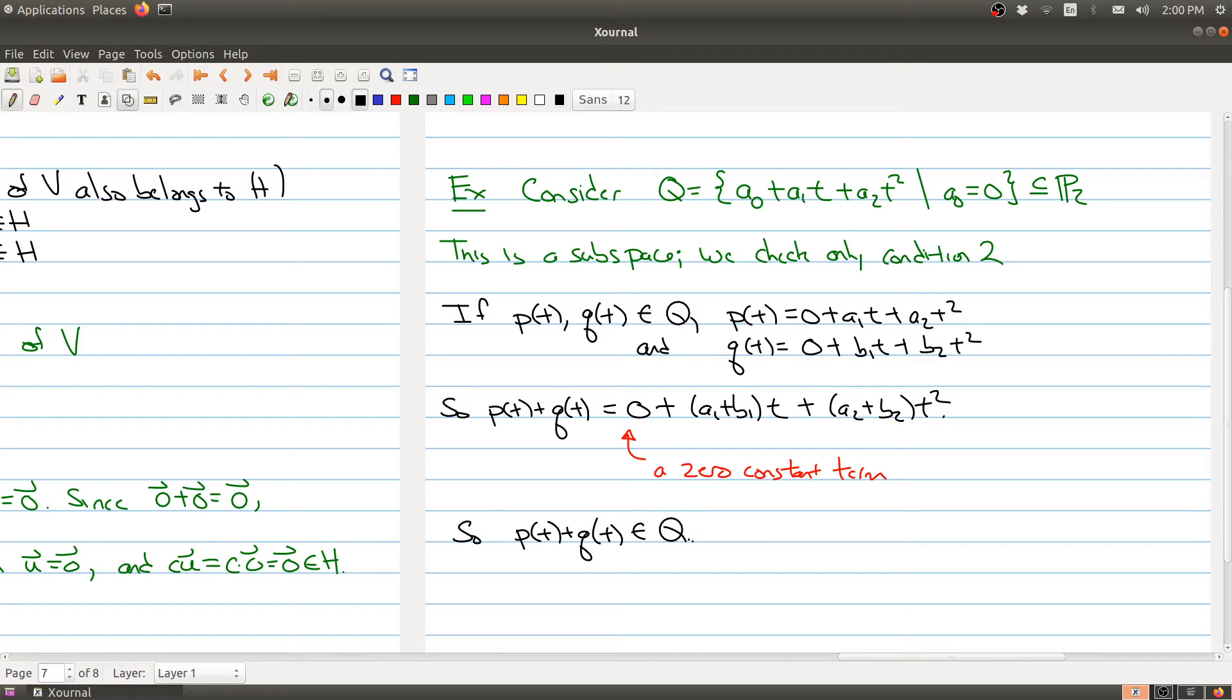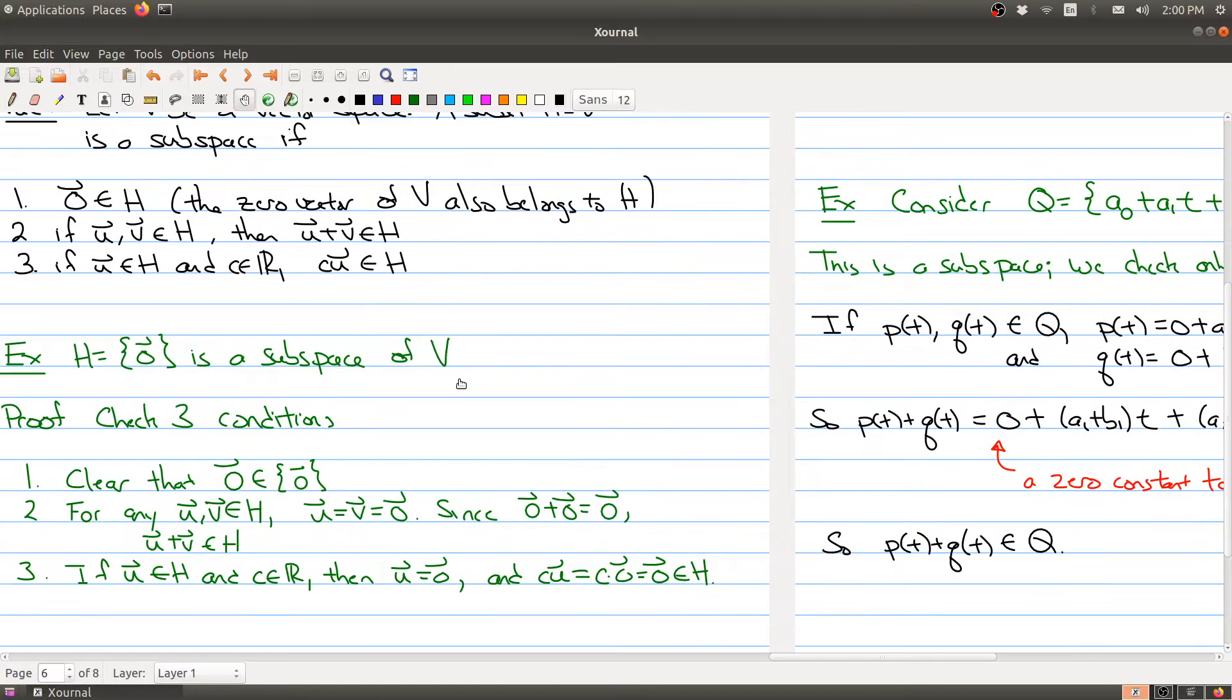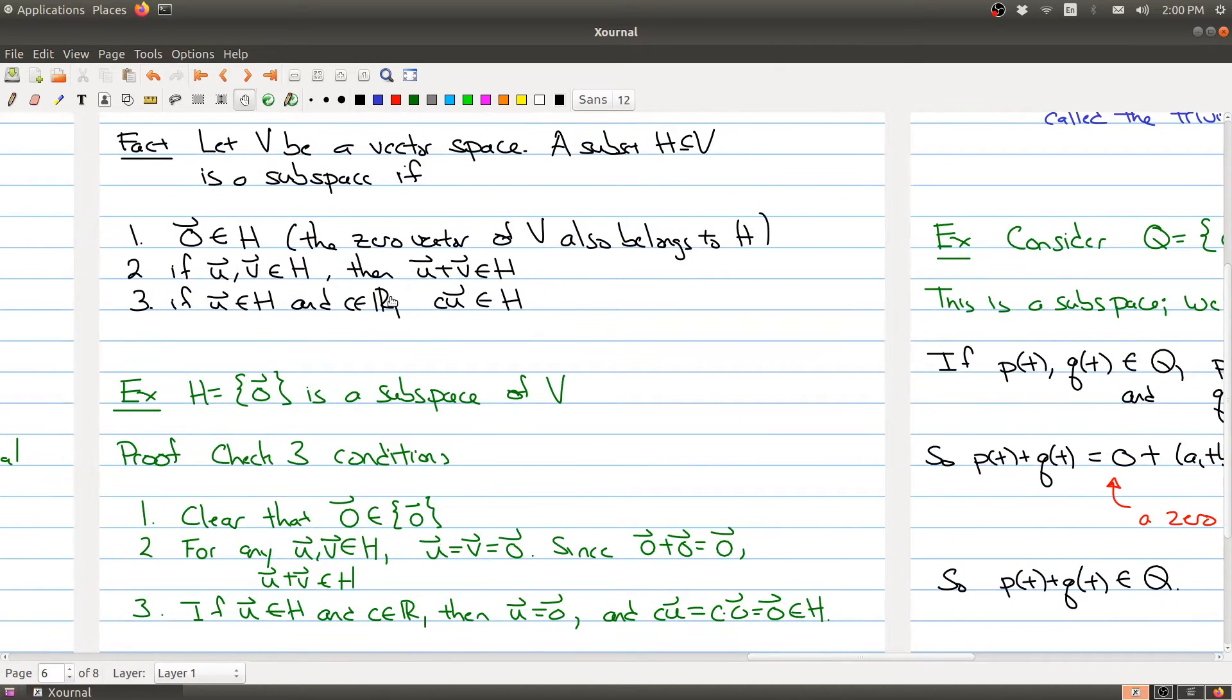And because Q contains all the polynomials with zero constant term, we have that Pt plus Qt also belongs to Q. So the claim is that this is a subspace, and here we've only checked condition two. If you want, you could try thinking about the other two conditions. But this is kind of how these types of proofs would be carried out.